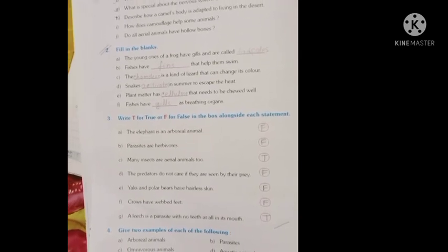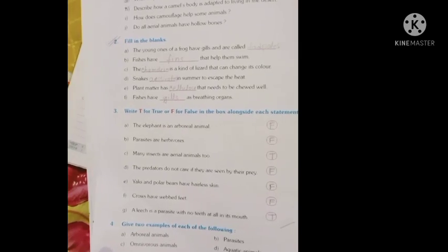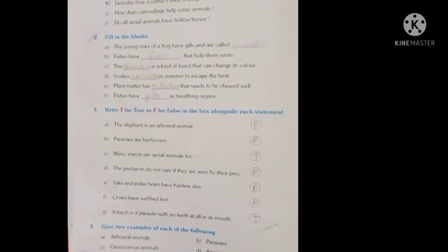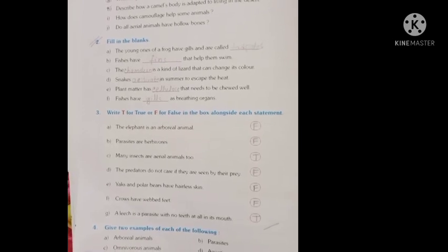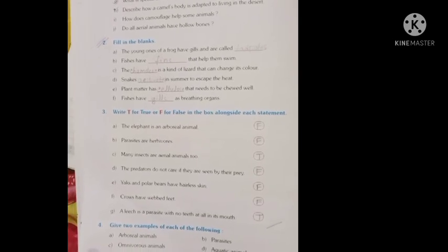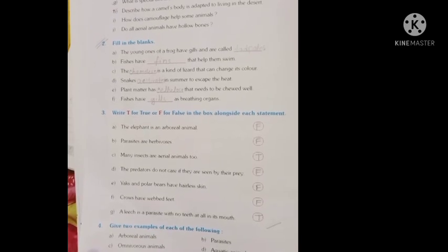Many insects are aerial animals too - true. The predators do not care if they are seen by their prey - false. Yaks and polar bears have hairless skin - false. Crows have webbed feet - false.